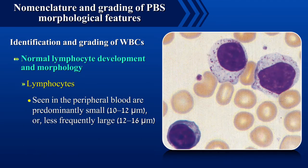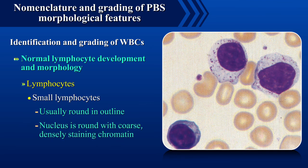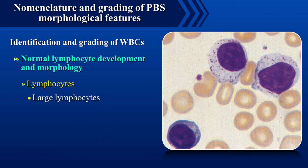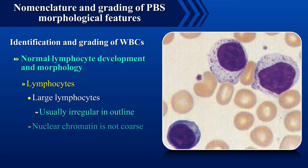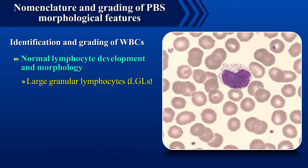Lymphocytes seen in the peripheral blood are predominantly small, about 10 to 12 microns, or less frequently large, 12 to 16 microns. Small lymphocytes are usually round in outline and the nucleus is round with coarse densely staining chromatin and scanty cytoplasm. Large lymphocytes are usually irregular in outline, the nuclear chromatin is not as coarse, and cytoplasm is abundant and tends to be light sky blue in color.